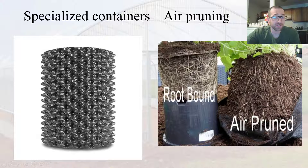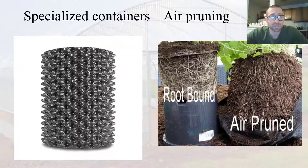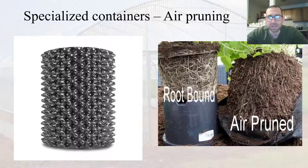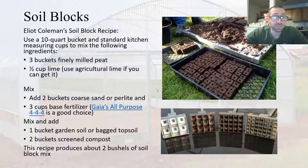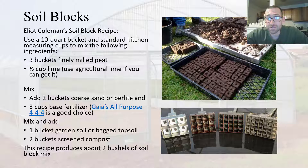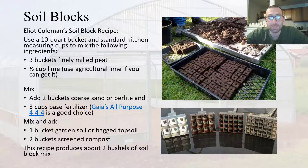There are specialized containers that deal with this problem. One is a container that utilizes air pruning. It has all these little holes — as your roots are growing and starting to expand and would otherwise start circling around, instead they find their way through these holes. When they're exposed to air, that air naturally prunes them, so instead of getting root bound, you get a nice root system. A potential benefit of soil blocks is the same thing — because soil blocks are exposed to air and your plant is not growing in a cell, as roots expand outside of the soil block they will naturally get pruned. So you don't get root-bound blocks.